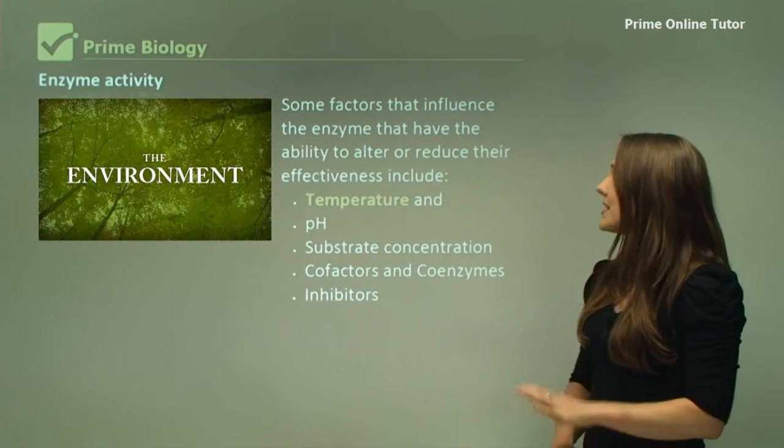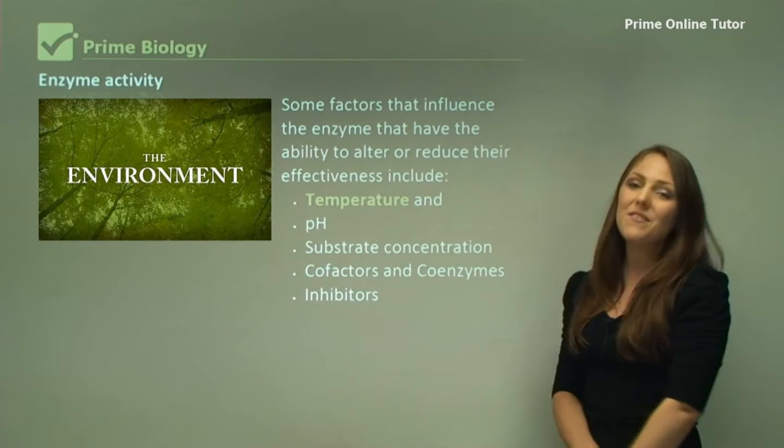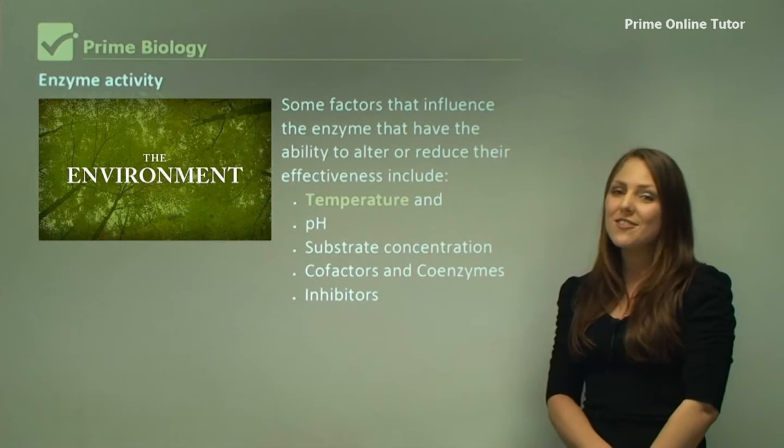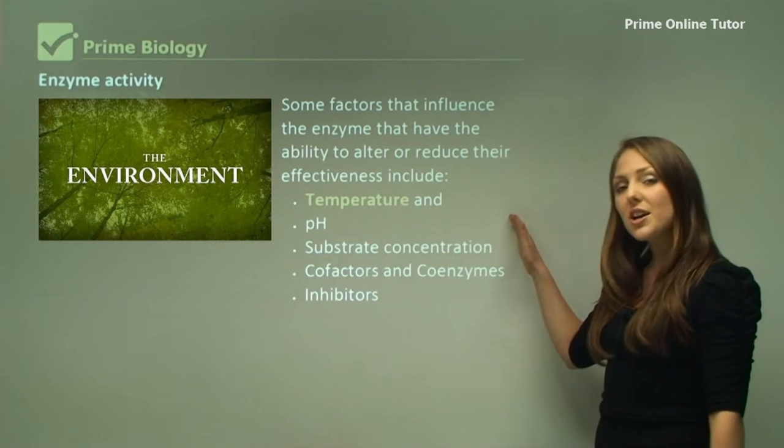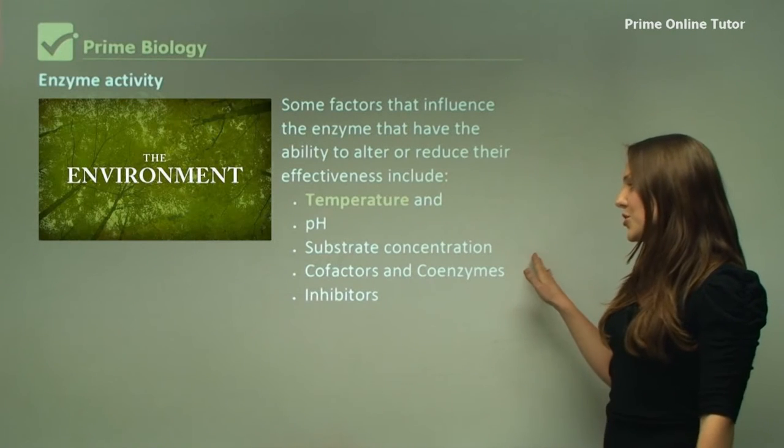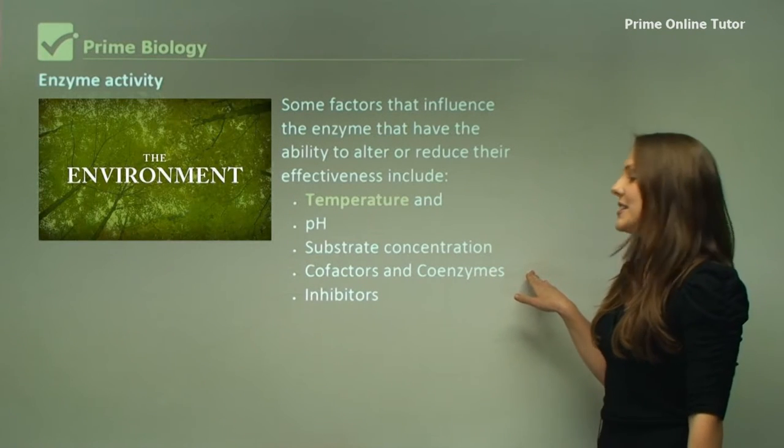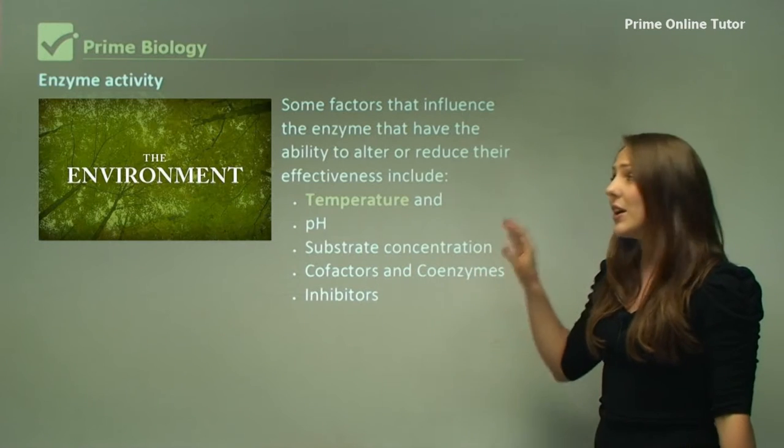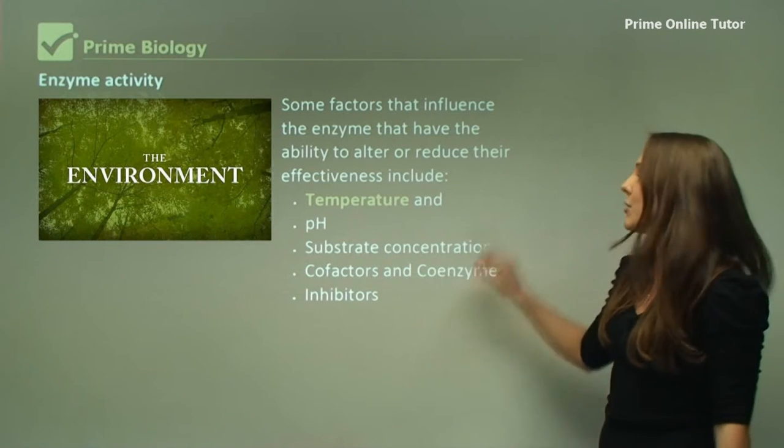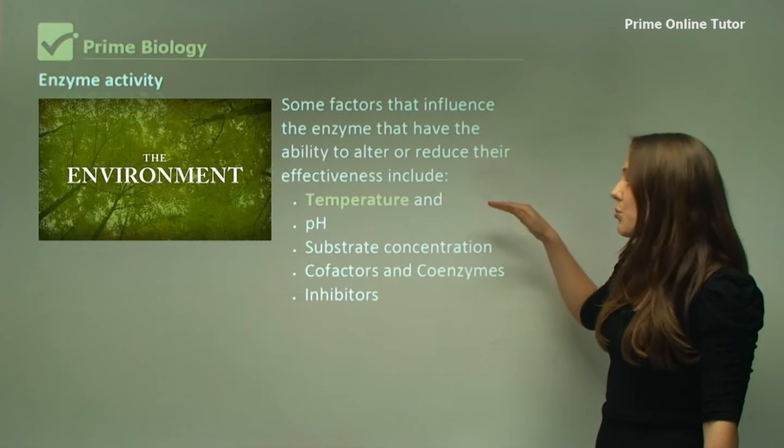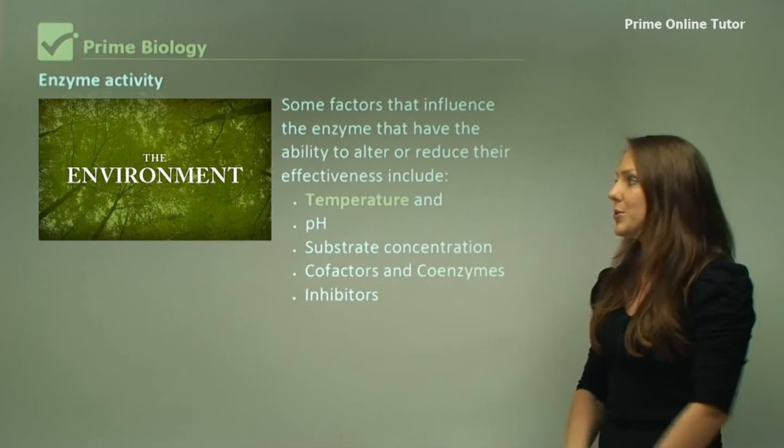Some factors that influence the enzyme that have the ability to alter or reduce their effectiveness include temperature, pH, substrate concentration, cofactors and coenzymes, and inhibitors. In this video we're only focusing on temperature and we're going to go through pH and the others in other videos.